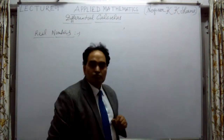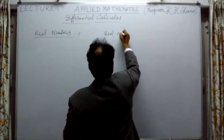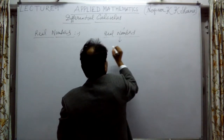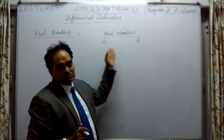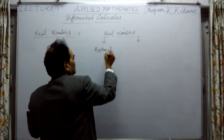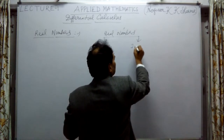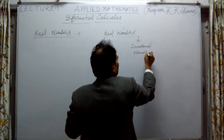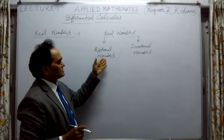Real numbers are divided into two parts. First is rational numbers and second is irrational numbers. What are the rational numbers? What are the irrational numbers?